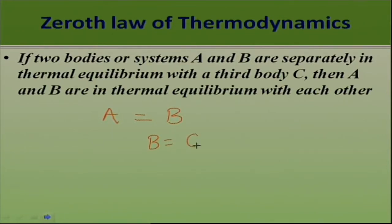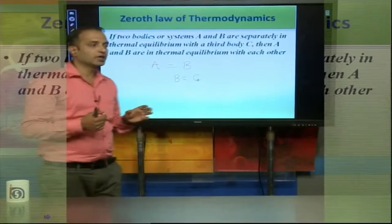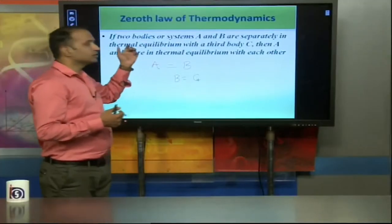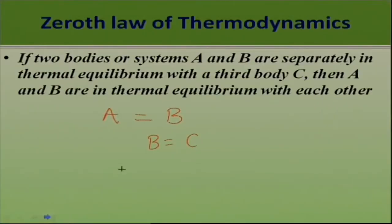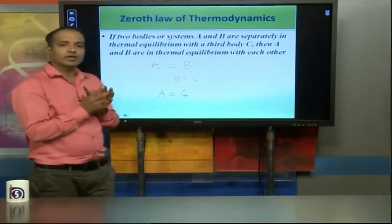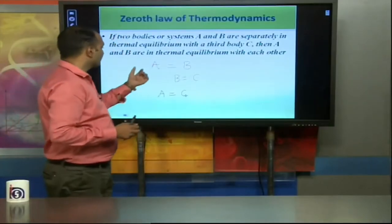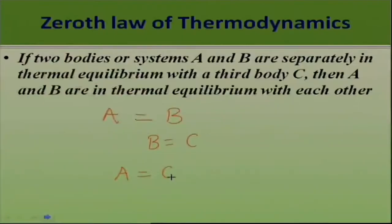Since the temperature of B equals that of C, according to the zeroth law, A will also be at the same temperature as C — both will be in thermal equilibrium. So we can say that temperature of A equals temperature of B equals temperature of C. All three systems are in equilibrium with each other.